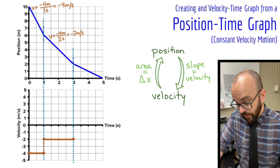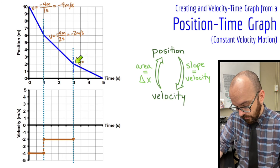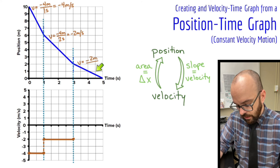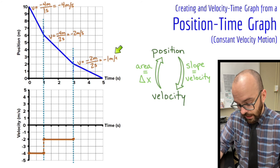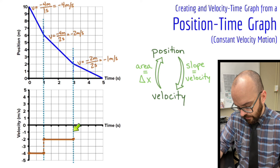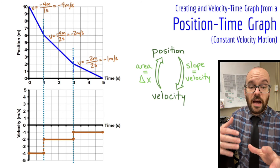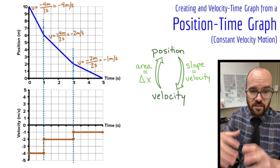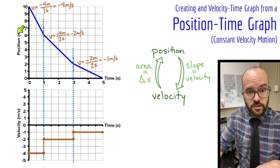In the last interval, I'm starting at a position of two and ending at zero — a change of negative two meters over two seconds. That gives a velocity of negative one meter per second. I graph that down here as a horizontal line connected with the dotted line. Now I have a velocity time graph that describes the same motion as my position time graph.